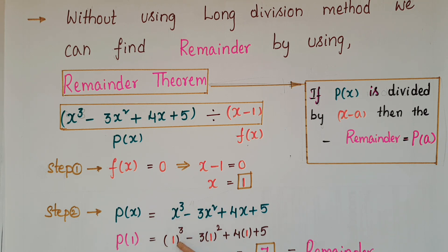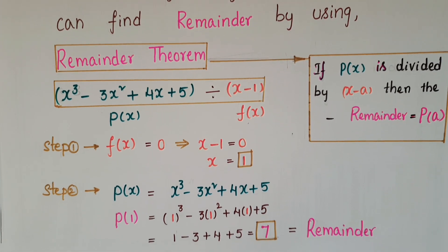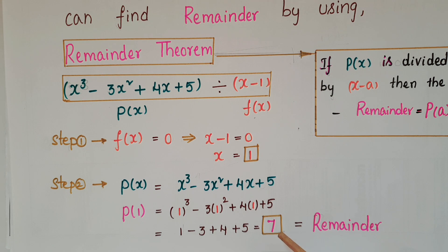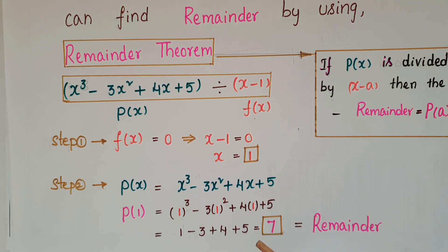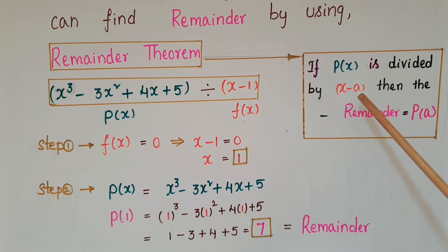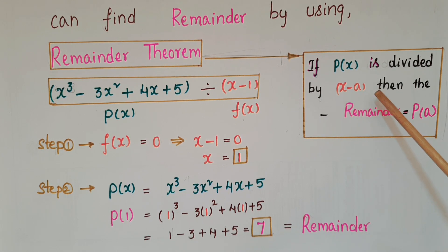Find the value of p(1): replace x with 1, so 1³ - 3(1²) + 4(1) + 5 = 1 - 3 + 4 + 5 = 7. So without using the long division method we can directly calculate the remainder using the Remainder Theorem. The remainder p(1) = 7. We can now state: if p(x) is divided by x - a, then the remainder is equal to p(a).